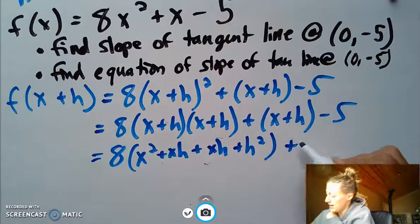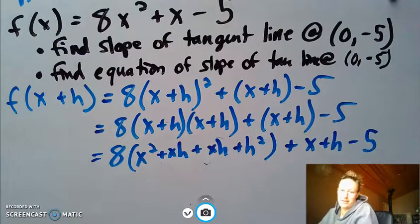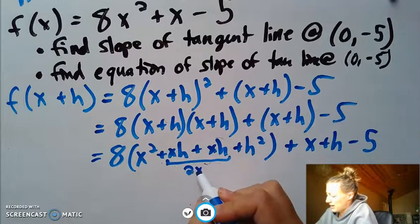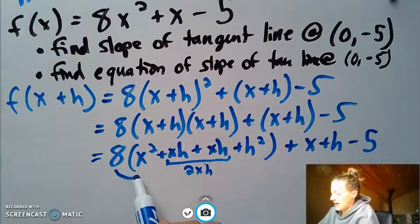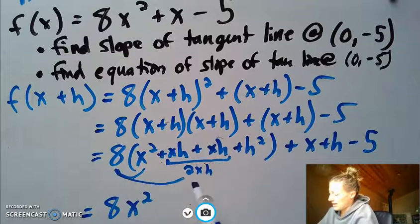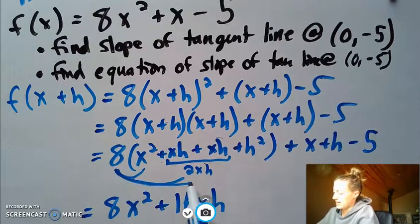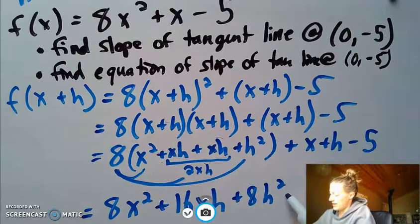So I'm going to foil these two together and then keep the 8 out front. So first x² + xh + another hx. But hx and xh are the same because 2 times 3 is the same thing as 3 times 2. We could call these both xh's if we want, and we can see they're the same. We can combine terms later. And then last, h times h.